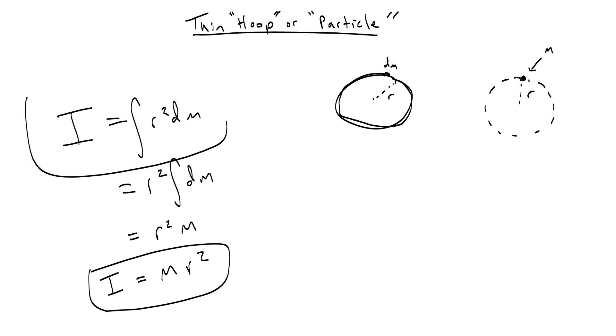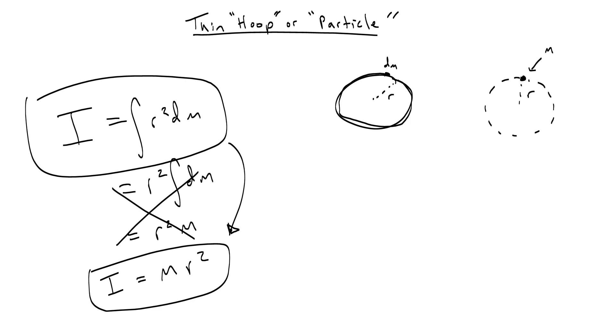On the AP test, if you just write these two things — the integral of r squared dm equals mr squared — and don't really worry about the middle steps, you will quickly get the points for this derivation.